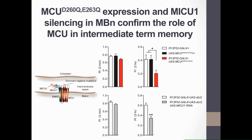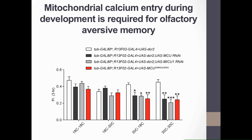Given the role of mitochondrial calcium entry in regulating metabolism or buffering calcium transients, our expectation was that mitochondrial calcium entry is required in adult flies at the time of training and testing for normal memory. The less likely hypothesis was that mitochondrial calcium entry was required in mushroom body neurons during development to establish a competency that is then required in adult flies for normal memory. To distinguish between these two possibilities, we performed targeted experiments originally developed by Sean Maywire in the Davis lab.